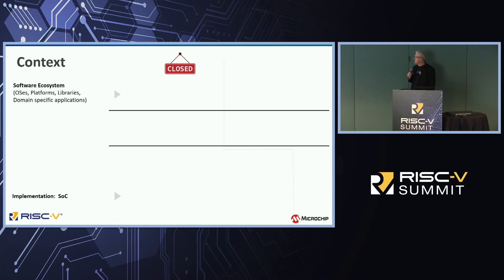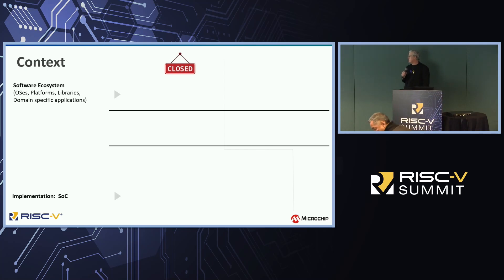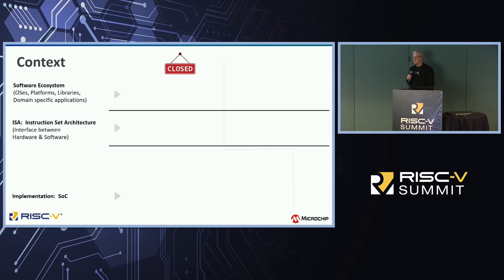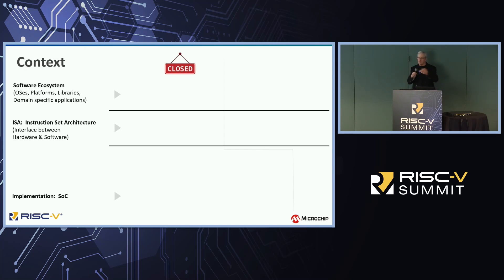Some important context. There's a software ecosystem at the top and then implementation — that's the actual hardware, a chip that someone makes. So you have software and you want to run it on a piece of silicon. The ISA, which is what RISC-V is, is the instruction set architecture, and it's really the contract or the interface between the hardware and software. This is an important distinction and it really defines what RISC-V International is about.